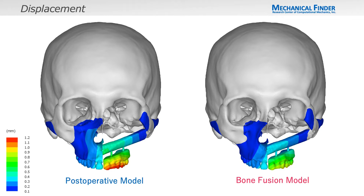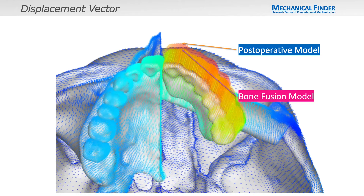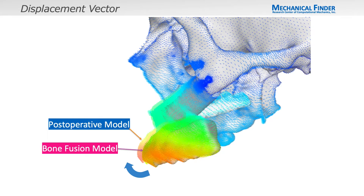Displacement of the overdenture was greatest in both models. The maximum displacement in the postoperative model was 1.0 mm. The fibula was displaced approximately 0.1 to 0.6 mm in the postoperative model and 0.1 to 0.4 mm in the bone fusion model. The fibula displacement was greater on the median side. The displacement vectors show that the postoperative model has a larger displacement toward the head side compared to the bone fusion model. The overdenture is noticeably displaced anteriorly; in other words, the overdenture is considered to rotate upward and forward around the fibula due to mastication.